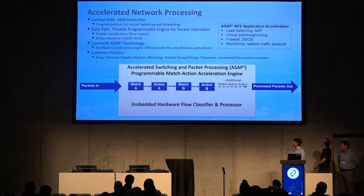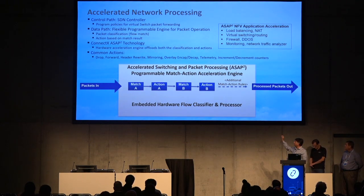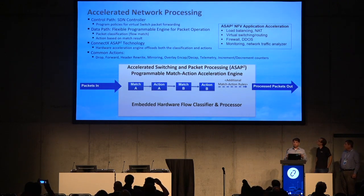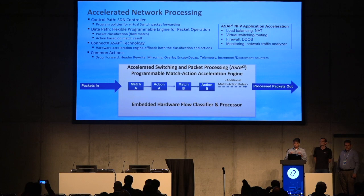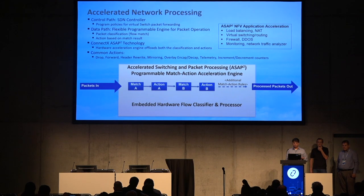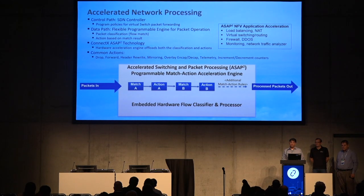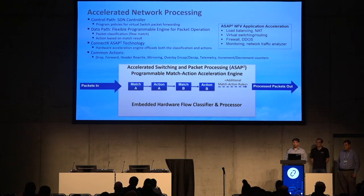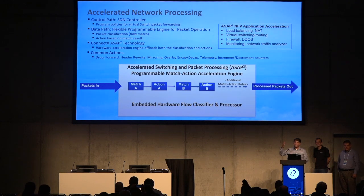Here's an OpenFlow pipeline example. You classify flows based on criteria like five-tuples, then put actions on them — and this is programmable in the e-switch today. The e-switch lets you classify on five-tuples and take actions like drop, forward, rewrite headers, mirroring, overlay encap/decap, telemetry, increment/decrement counters. All kinds of things are possible, making it important for NATing, load balancing, ACLs, firewalls, and DDoS mitigation — all offloaded into the switch hardware rather than the software path.